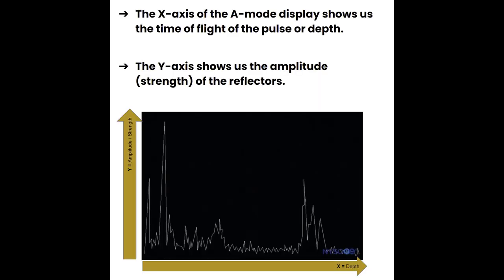Another way to look at A mode is to think about how it resembles a city skyline. The x-axis of the A mode display shows us the time of flight of the pulse, or the depth — so this is very superficial over here, and this is getting deeper as the dot travels down the scan line. So superficial structures are on the left side, and deep structures are on the right side. The y-axis is going to show us the amplitude or the strength of the reflectors — the taller the spike, the stronger the echo is returning.